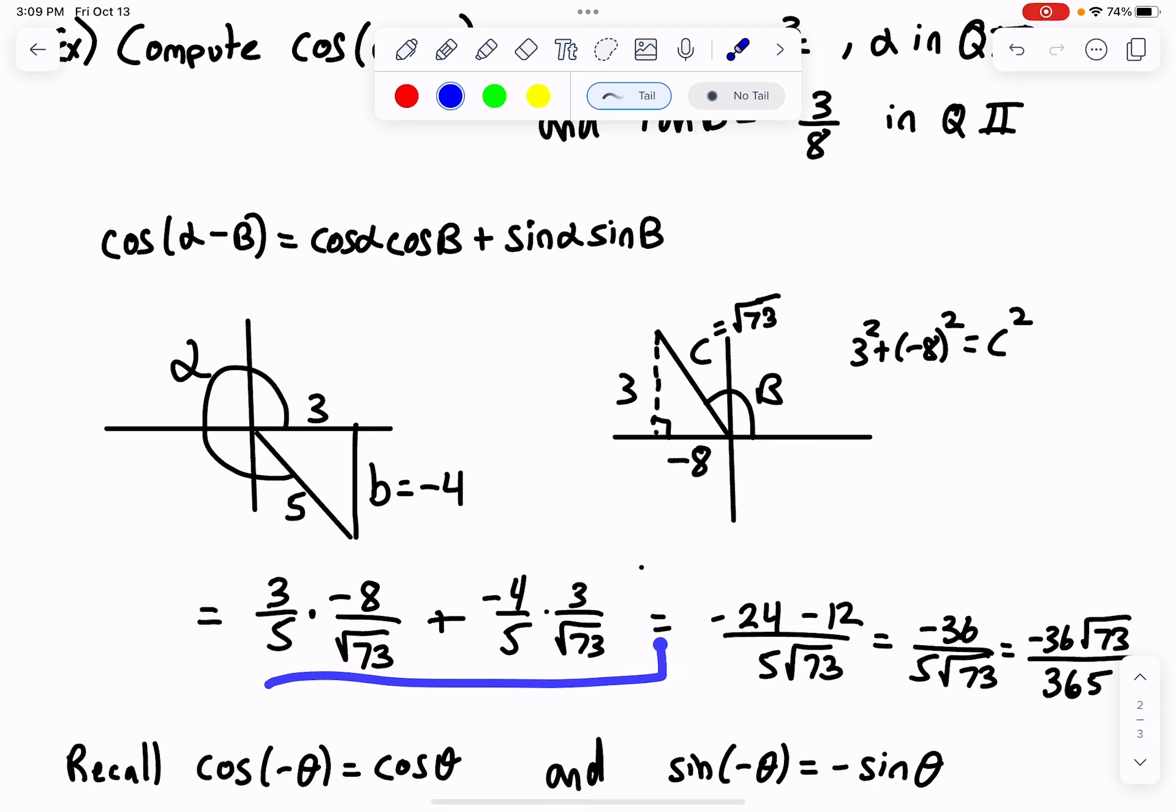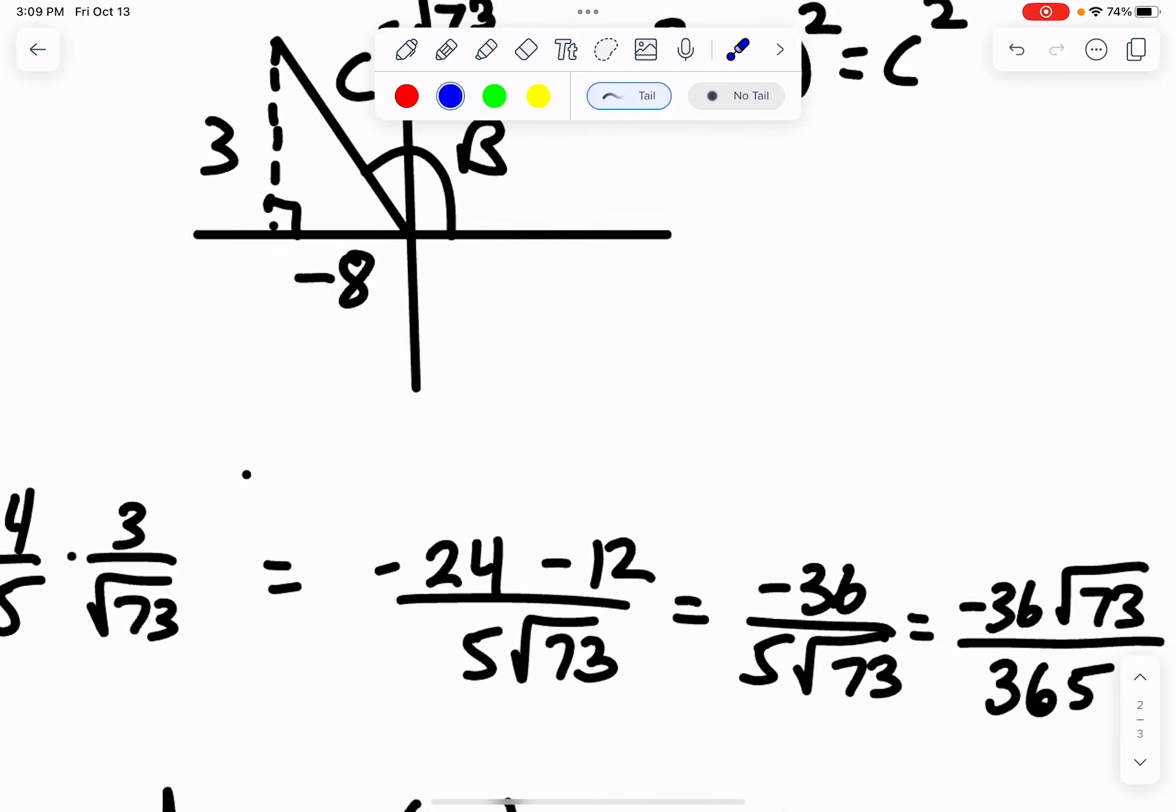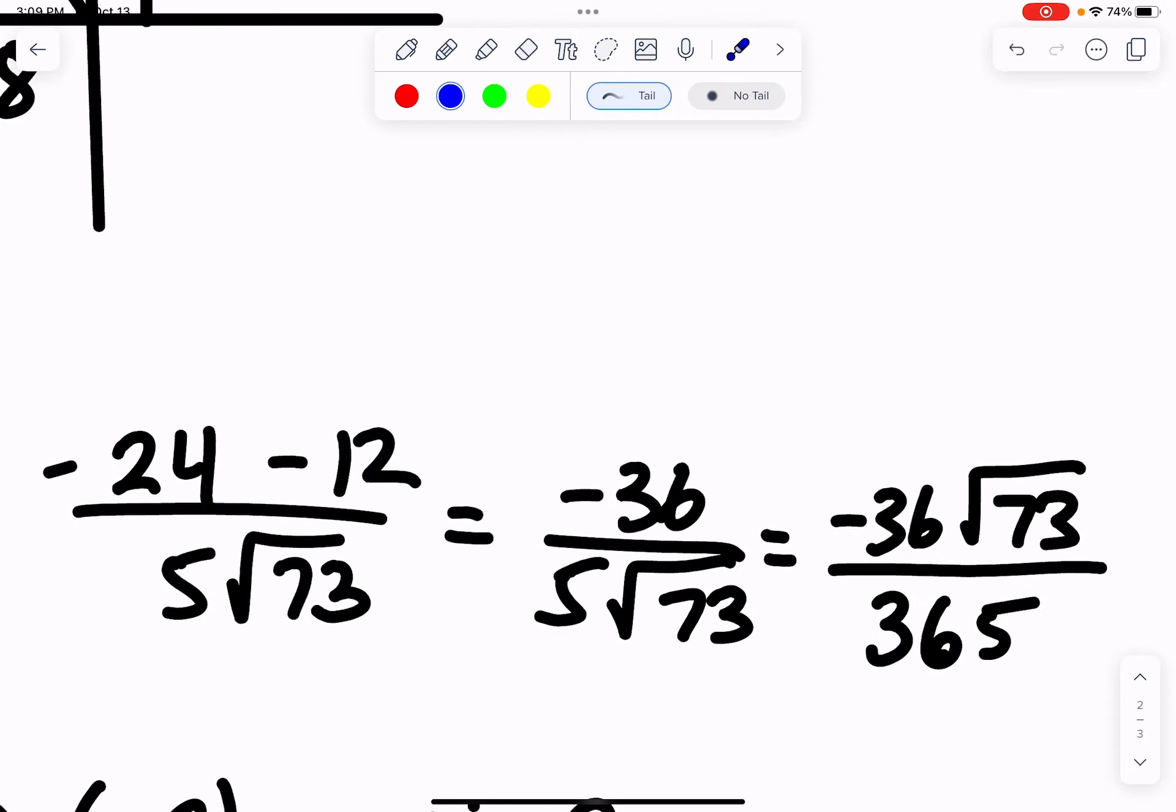Now I've taken that expression and simplified. Three times minus eight is minus 24, minus four times three is minus 12, and both have five square root of 73 as their denominator. Simplifying across the top, minus 24 minus 12 is minus 36 over five square root of 73.